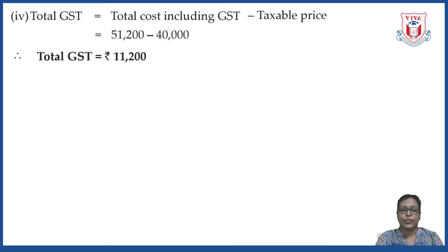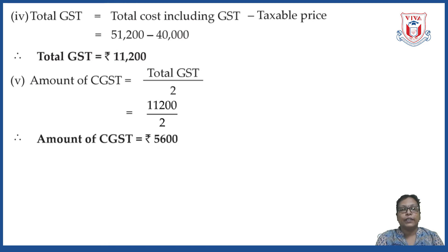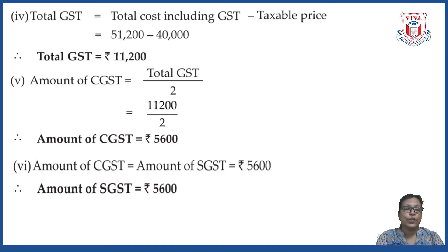From total GST, we can calculate CGST and SGST. The amount of CGST equals total GST divided by 2, so 11,200 divided by 2 equals rupees 5,600. Since CGST and SGST are always the same, the amount of SGST is also rupees 5,600. So even though many things were to be found, the question was not difficult at all.